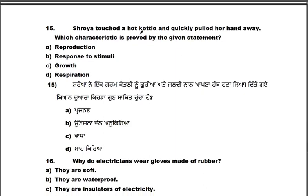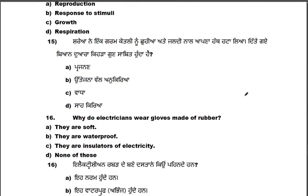Shriya touched a hot kettle and she quickly pulled her hand away. Which characteristic is represented by this statement? Options: reproduction, response to stimuli, growth, respiration. She responded to the heat stimulus by removing her hands — the answer is response to stimuli.